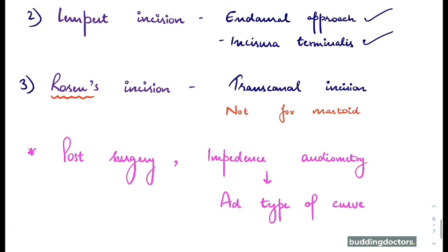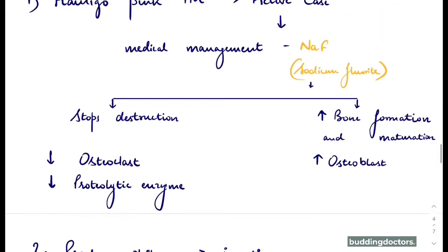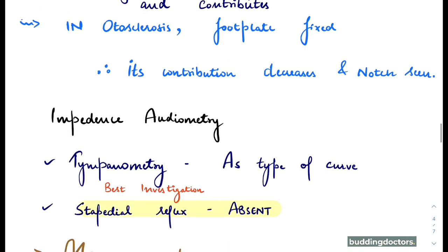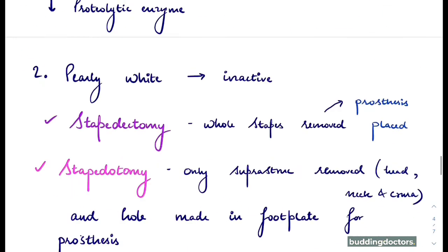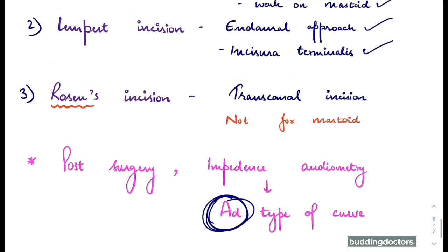Post-surgery, impedance audiometry will show an AD type curve, compared to the AS type curve seen before surgery. That concludes the topic of otosclerosis. I hope the topic is clear. Thank you.